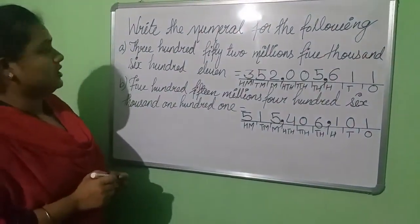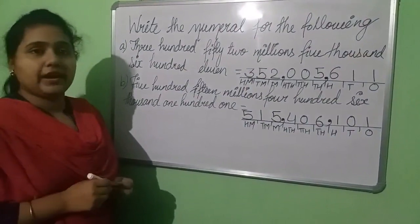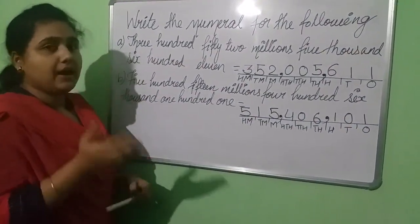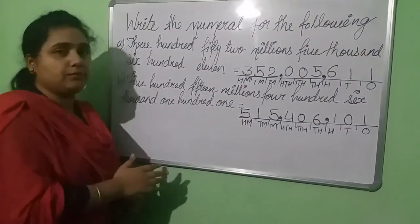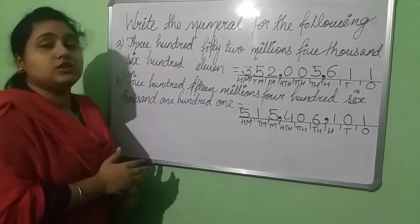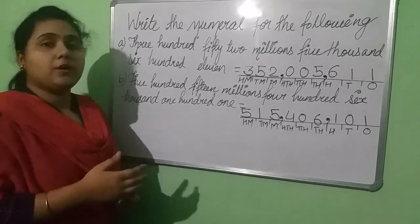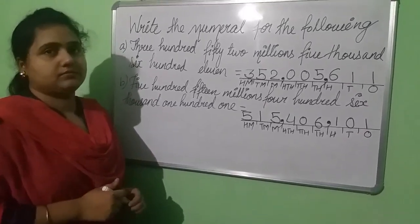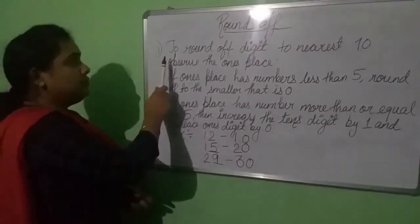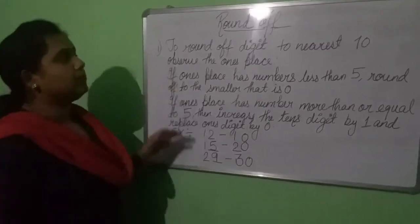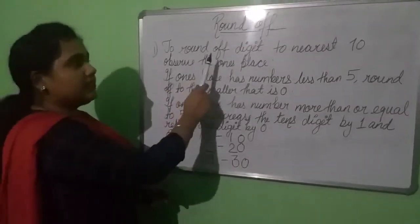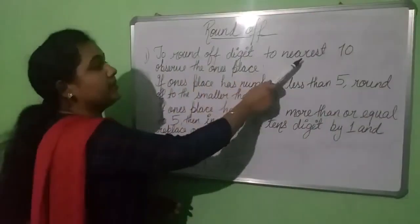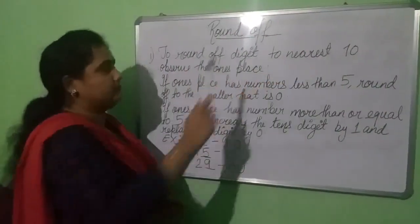I think now you are able to write numerals in number name form and number names in numeral form. Now the next topic is rounding up. Firstly, we are going to learn how we can round up a digit to the nearest 10.